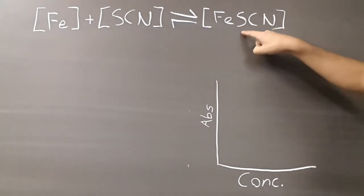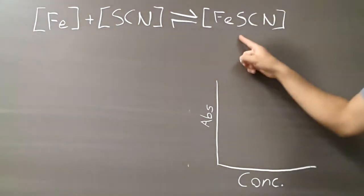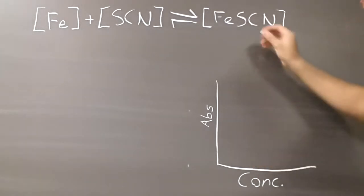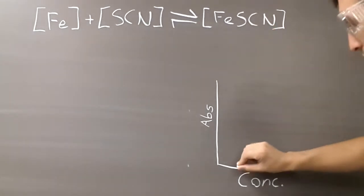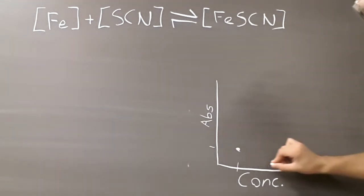Now, this iron thiocyanate will have a certain absorption, and we have different concentrations of iron, which will therefore give us different concentrations of iron thiocyanate. So we take that concentration of iron thiocyanate and we plot it on this absorbance versus concentration graph.